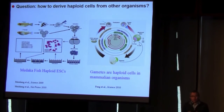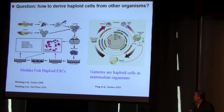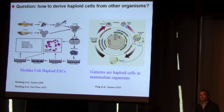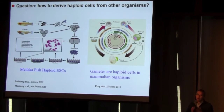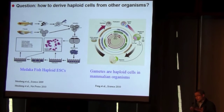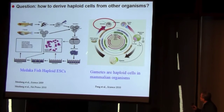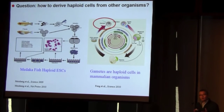So the next question is: can we derive haploid cells from other organisms? Actually, this has been an open question for a long time. In 2009, a group from Singapore reported the generation of haploid cells from medaka fish. This study indicated that if the technology is feasible and available, we may produce haploid cells from other organisms, even from mammals.